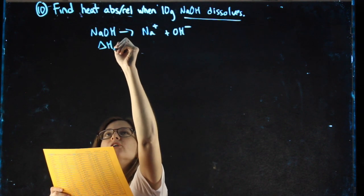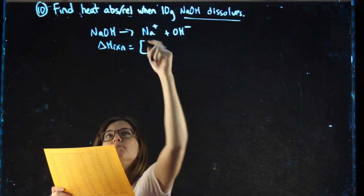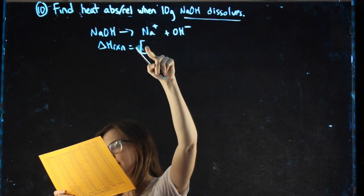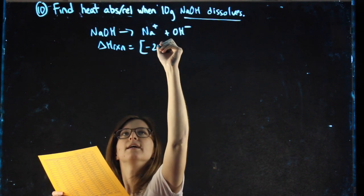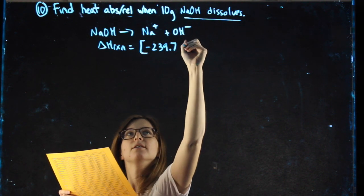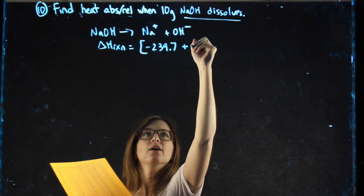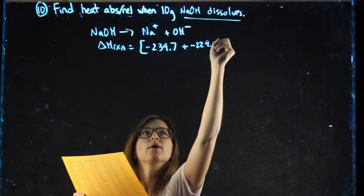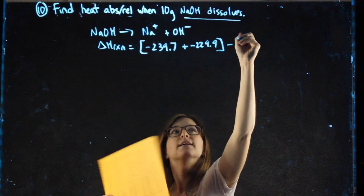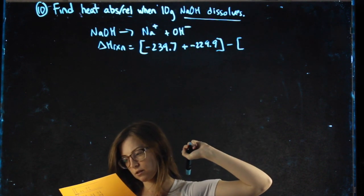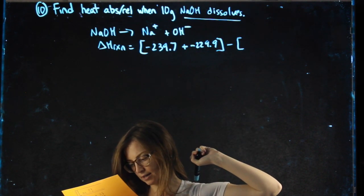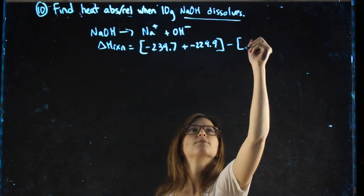Heat of reaction is products, so sodium ion negative 239.7 and the hydroxide ion negative 229.9, minus reactants. The value for sodium hydroxide is negative 426.7.